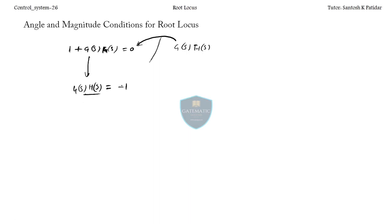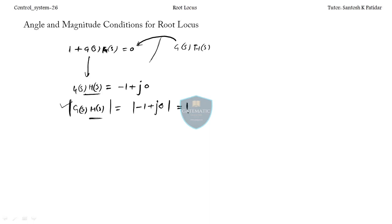Taking G(s)H(s) to the other side gives G(s)H(s) = -1, which we can write as -1 + j0. Now for the magnitude condition, the magnitude of G(s)H(s) equals the magnitude of -1 + j0, which is 1. So if your system satisfies the root locus concept, the magnitude of the system should be 1. This is the condition for closed loop stability under negative feedback.